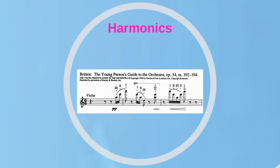If a string is lightly touched at precisely its midpoint, the fundamental pitch is suppressed and the second partial sounds. This effect, which is available on all string instruments, is known as a natural harmonic. It is possible to touch the string in several places so that any one of the first four or more partials will sound. On the violin's open G string, you can produce the second partial (the G above), the third partial (a fifth above that), and the fourth partial (another fourth above that).